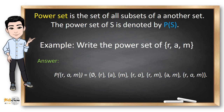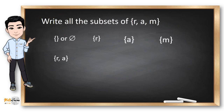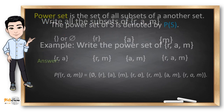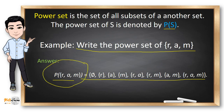Speaking of subsets, the power set is the set of all subsets of another set. The power set of S is always denoted by P. In the previous example, if we write all the subsets in a single set, then this is the power set of the set {R, A, M}. You just collect all the subsets, and the resulting set is called the power set.